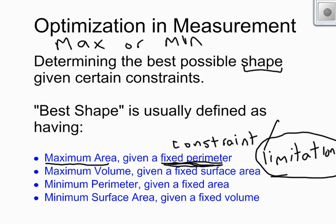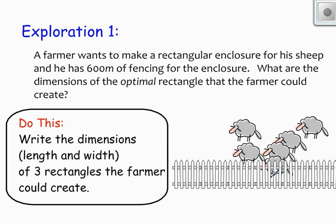So let's see if we can make sense of it by doing an exploration together. And here's a question that we're going to do. It says a farmer wants to make a rectangular enclosure for his sheep. And he has 600 meters of fencing for the enclosure. What are the dimensions of the optimal rectangle that the farmer could create? So you can see the word optimal here, and obviously that's the word that relates to optimization. So you can think of this as the best rectangle the farmer could make.